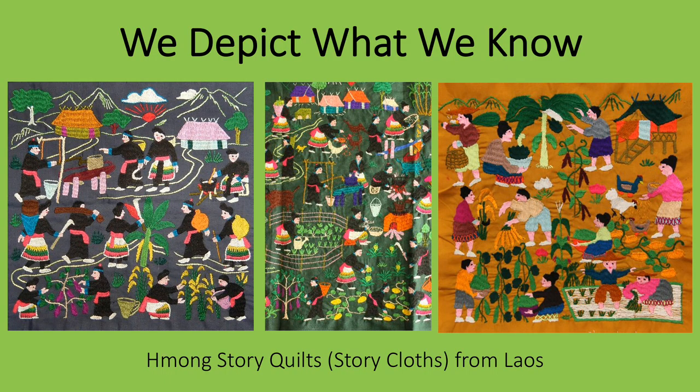In art, we often depict what we know. These Hmong story quilts, or story cloths made in Laos, are filled with plants, gardening, and harvesting vegetables and grains because their makers live in a largely agrarian society. The images are embroidered with thread onto the fabric background. Usually they only have two layers, the embroidered top and a backing fabric, so they are often called cloths rather than quilts because technically a quilt has three layers: a top, a filler or batting, and a backing, though there are exceptions like the crazy quilts.